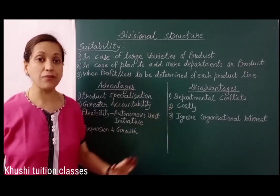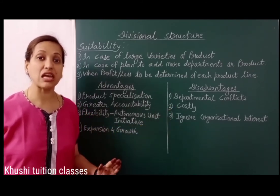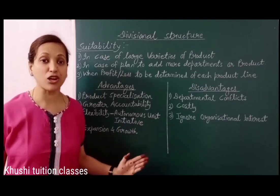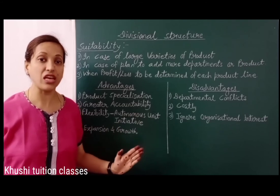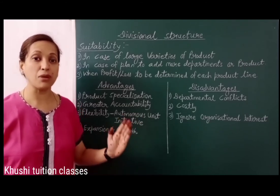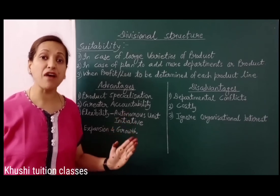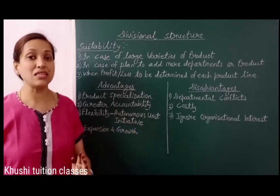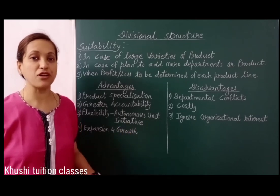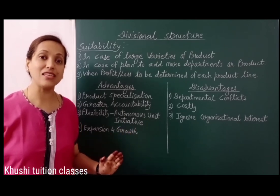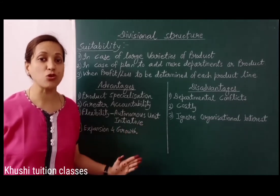The second disadvantage is costly. अब हर एक product division के लिए हर एक activity separately होती है. उनके पास अपने resources अलग-अलग होते हैं, जैसे raw material, machine and equipment, human resource. वे कोई भी function दूसरे departments के साथ share नहीं करते हैं, जिससे duplication of efforts होते हैं और organization का total operating cost increase हो जाता है.